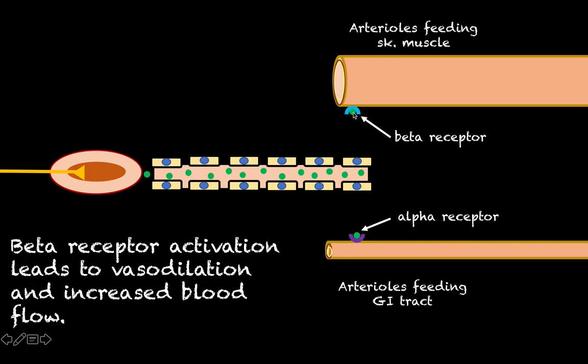On the other hand, when epinephrine binds to a beta receptor, we get vasodilation of the arterioles feeding skeletal muscle. This arteriole is now wide open and blood is rapidly delivered to the skeletal muscle, nourishing it with more oxygen and nutrients than before — which is exactly what's needed since the fight-or-flight response places extra demand on skeletal muscle.